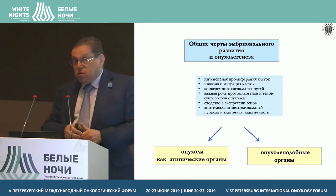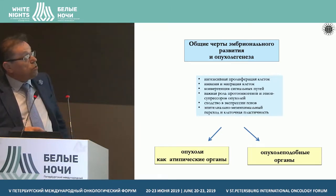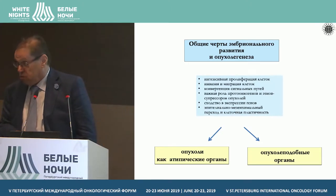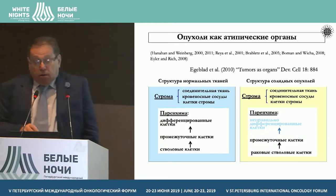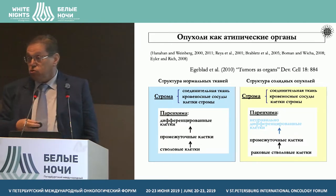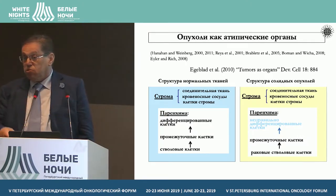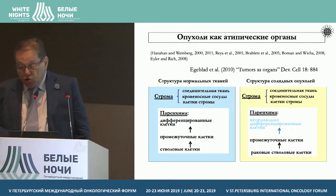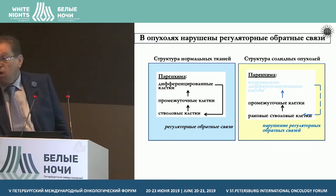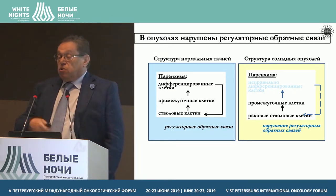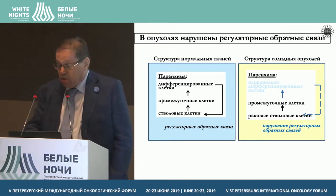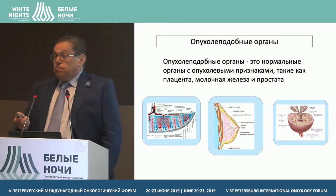There are many similarities like this, and many people only ask why and how. These multiple similarities lead to the situation where tumors, on the one hand, are considered as atypical organs. Solid tumors have a structure similar to normal organs — they have stroma, parenchyma, stem cells, and cells of higher differentiation. What differs is that the cells are differentiated improperly and some links are violated, but the concept of tumor as atypical organs has been accepted by many.